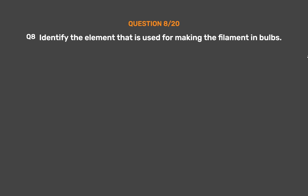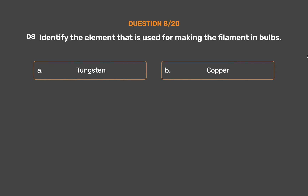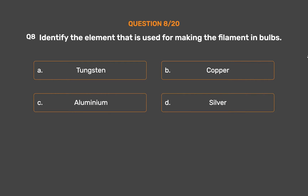Question number 8. Identify the element that is used for making the filament in bulbs. Option A: Tungsten. Option B: Copper. Option C: Aluminium. Option D: Silver.